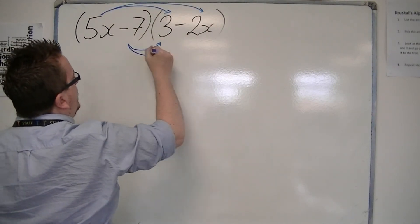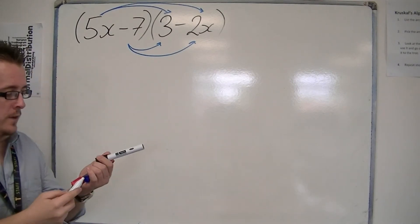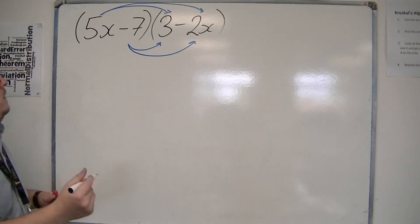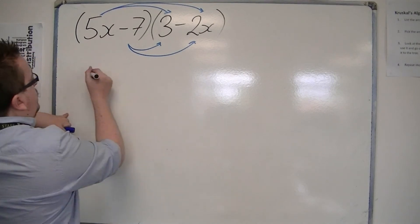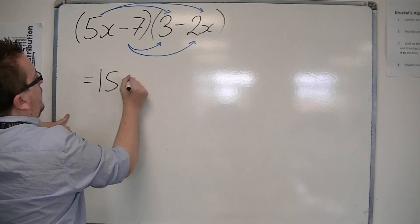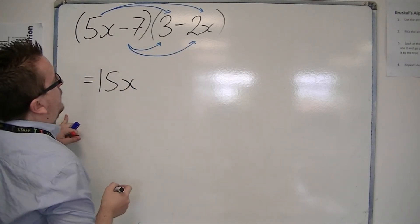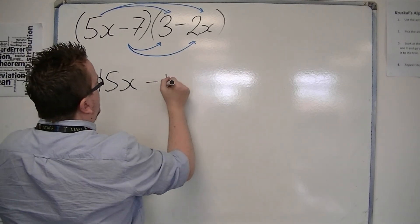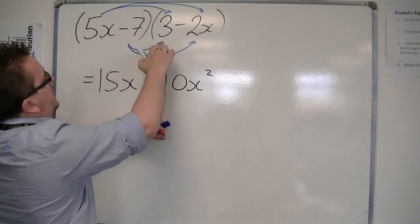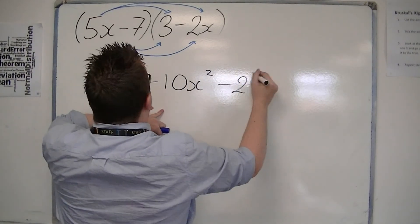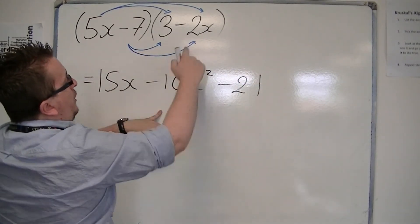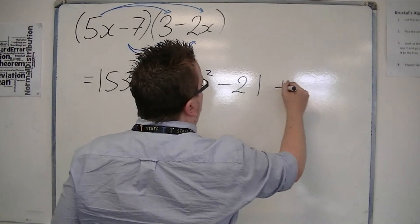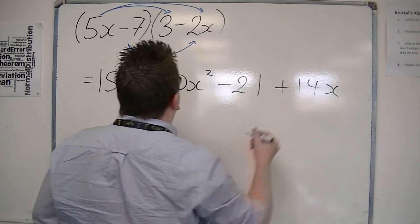If you prefer to use the grid, by all means follow on trying that out. So we have 5x times 3 makes 15x. 5x times minus 2x makes minus 10x squared. Then we've got minus 7 times 3 is minus 21, and minus 7 times 2x makes 14x, positive 14x.